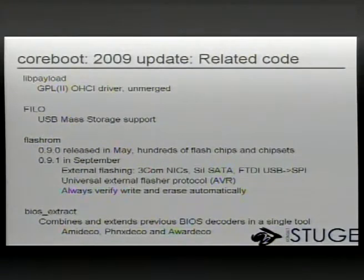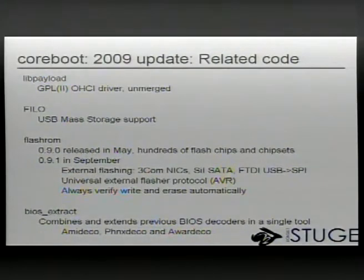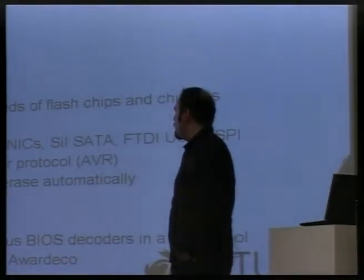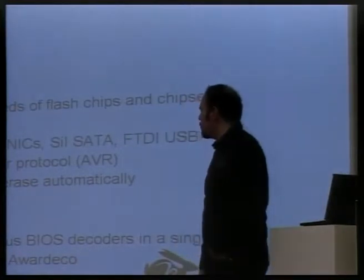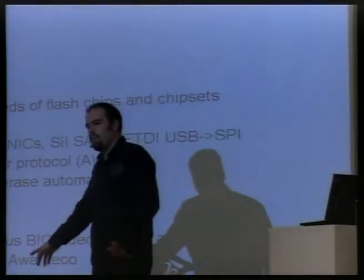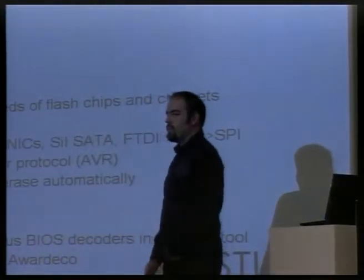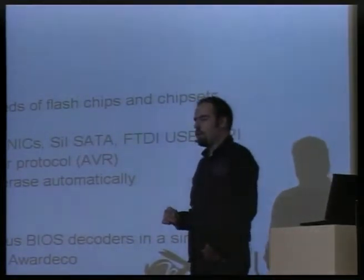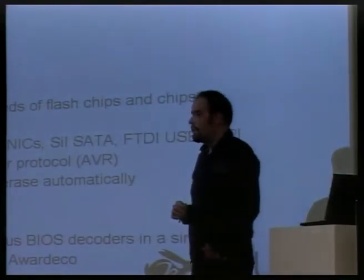Philo learned to do USB mass storage. FlashROM had two releases: 0.90 in May with hundreds of flash chips and chipsets supported. 0.90 in September came out and supports external flashing as well - not only the boot flash, but also flash chips on network adapters and on Silicon Image Serial ATA adapters.